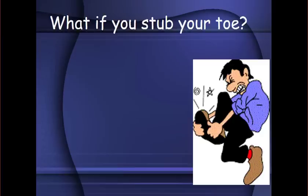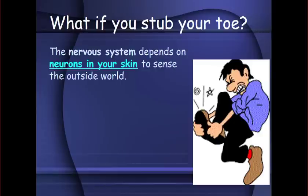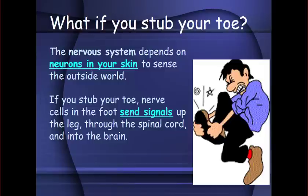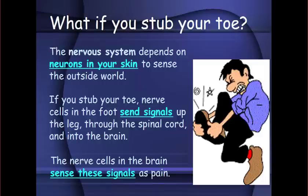Consider a situation where you stub your toe. The nervous system depends on neurons in your skin to sense the outside world. If you stub your toe, the nerve cells in the foot send signals up the leg, through the spinal cord, and into the brain. If the pain is significant enough, the spinal cord will trigger a reflex action to make you move quicker, while the nerve cells in the brain sense the signals as pain.